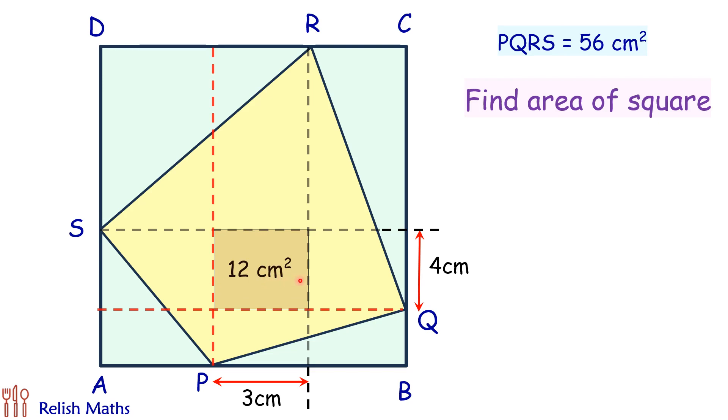Now if you look at this particular rectangle, RQ is a diagonal and we know in a rectangle diagonal divides it in equal areas, so if this is w this will also be w. Same way for this rectangle down below, PQ is acting as a diagonal and it's dividing into equal areas. If this is x then this will also be x.